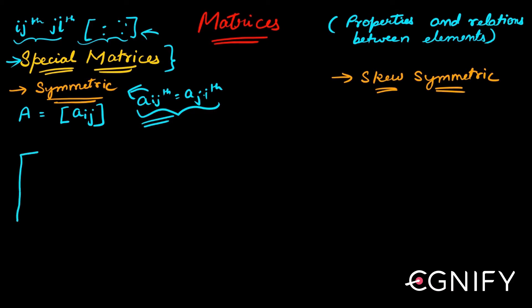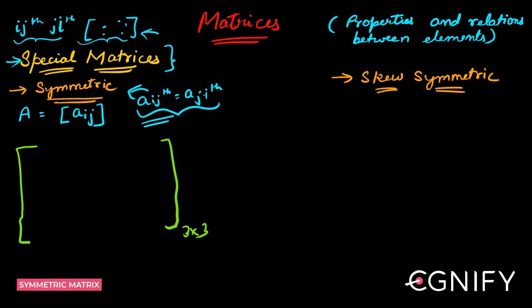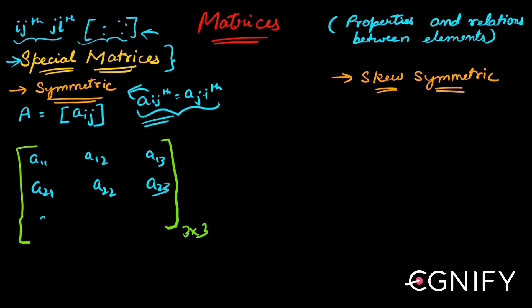Let's look at a matrix and try to understand this. So this is your matrix — let's take a three by three matrix for convenience. So the elements are: A11, A12, A13, A21, A22, A23, A31, A32, A33.